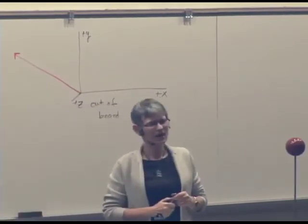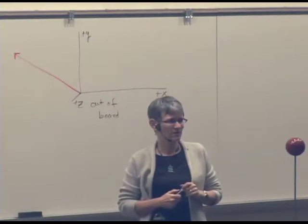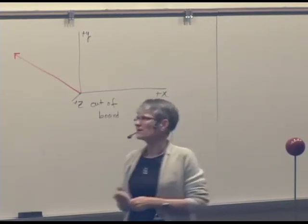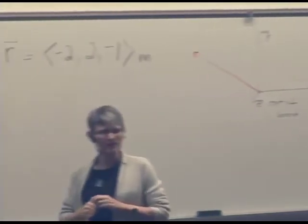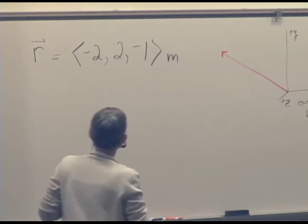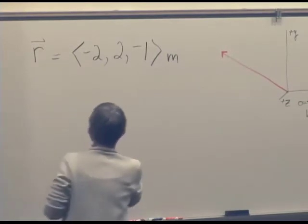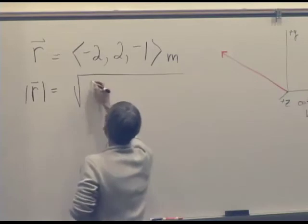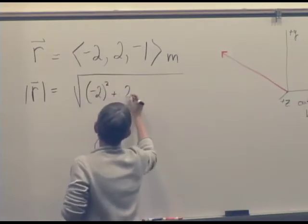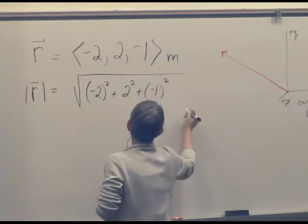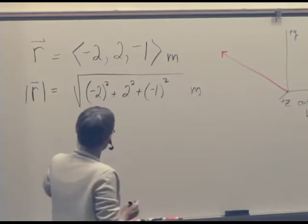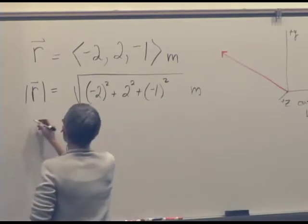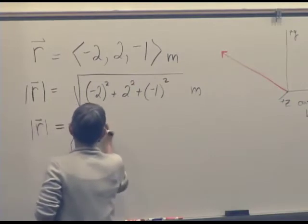This is vector r. It goes from the origin to the top of the screen. It doesn't tell us how far it is from here to there, does it? Or does it? How would I figure out how far it is going in a straight line from here to there? Got to take the magnitude of the vector. How would I do that? It's the Pythagorean theorem in three dimensions instead of two. So we write the magnitude of a vector as the square root of negative 2 squared plus 2 squared plus negative 1 squared meters. So that's a 4, and that's a 4, and that's a 1, and that's 9, and the square root of 9 is 3. So it looks like the magnitude of r is 3 meters.